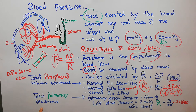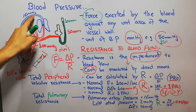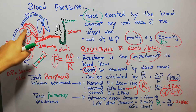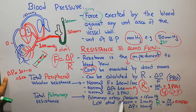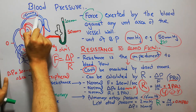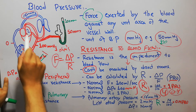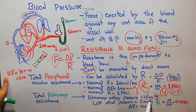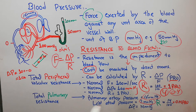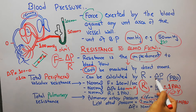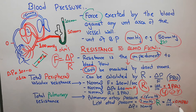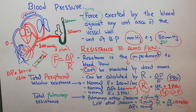To calculate total pulmonary resistance, we need the pressures in the pulmonary artery and the left atrium. The pressure in the pulmonary artery is about 16 mm of mercury, while the pressure in the left atrium is about 2 mm of mercury, giving a difference of 14. Putting these values into the modified Ohm's equation: 14 divided by 100 equals 0.14 peripheral resistance units.